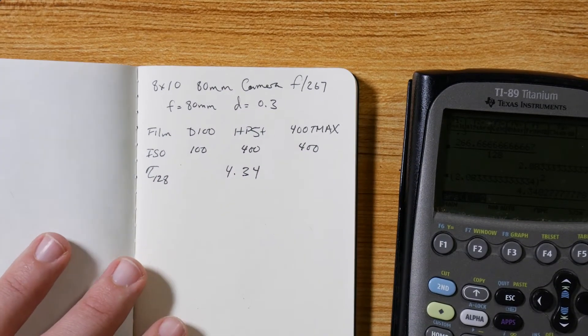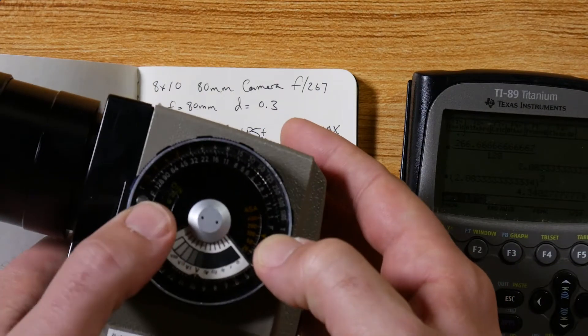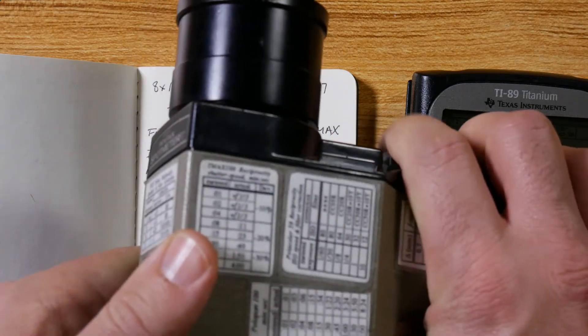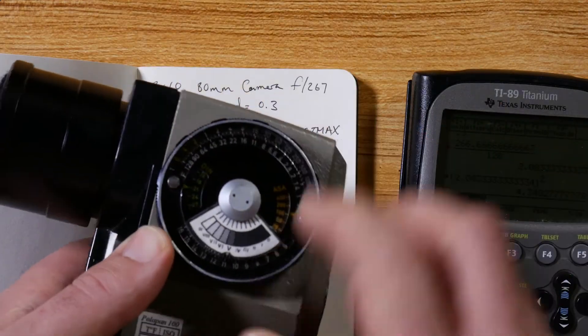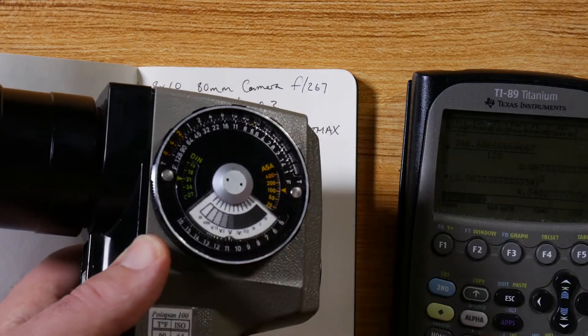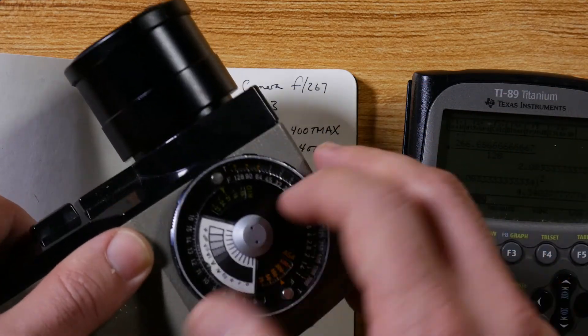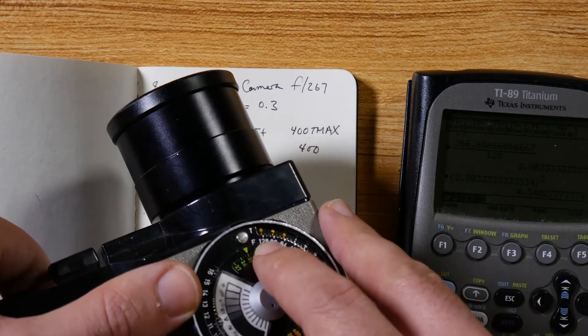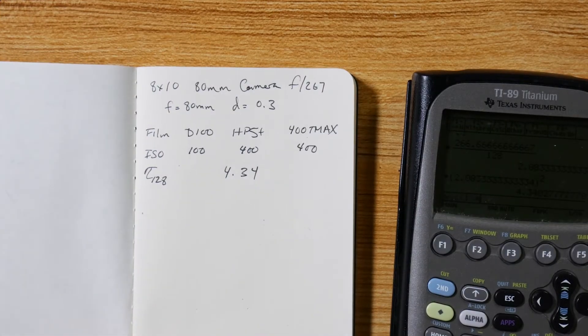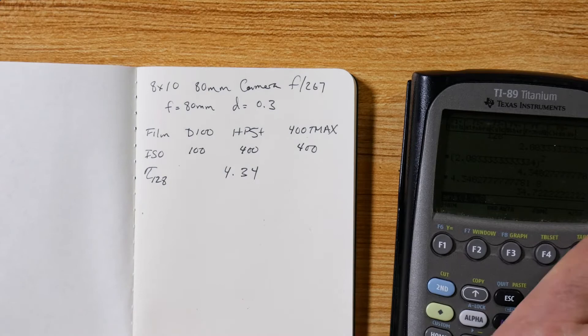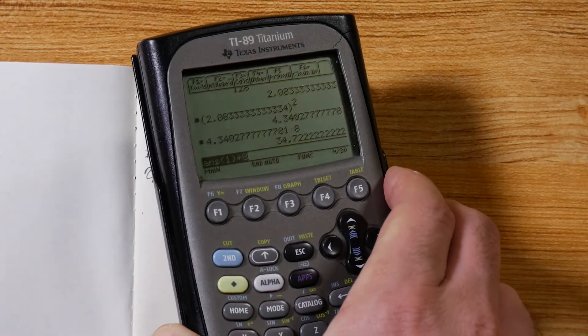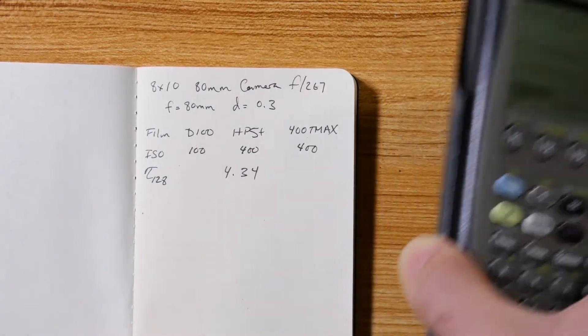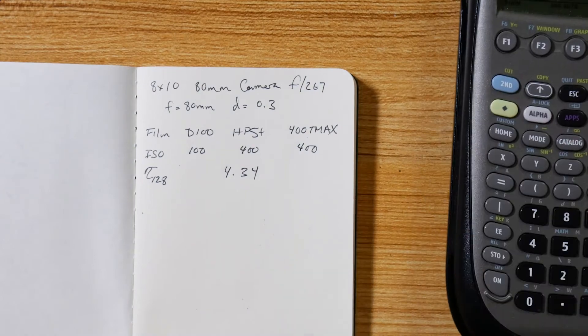So real quick as an example: set my ISO value to 100, I'm using Delta 100 in this example. I look through the scene, meter the scene, and turns out that the middle gray value zone 5 is at EV 11. Now I'm going to look at my 128, and that's showing me eight seconds. I take that eight seconds, I'm going to multiply that by this 4.34. That's my new shutter speed: 34.72 seconds.